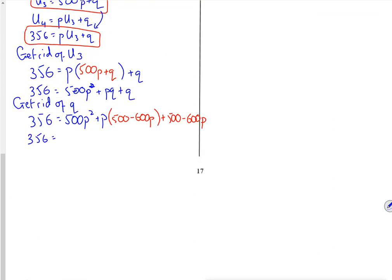Right, okay. So let's expand some brackets. I've got 356 is 500p squared plus 500p minus 600p squared plus 500 minus 600p. So let's just tidy the right hand side. So I've got 500p squared minus 600p squared. So I've got minus 100p squared. I've got 500p minus 600p, so that's a minus 100p. And then I've got a plus 500.